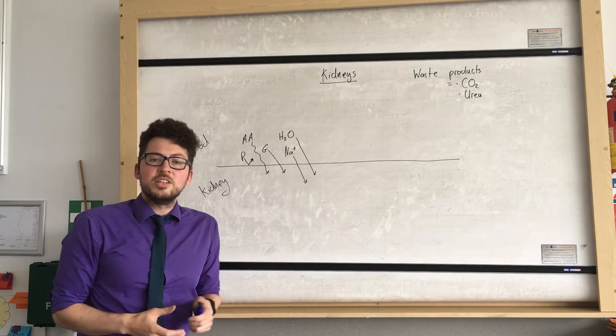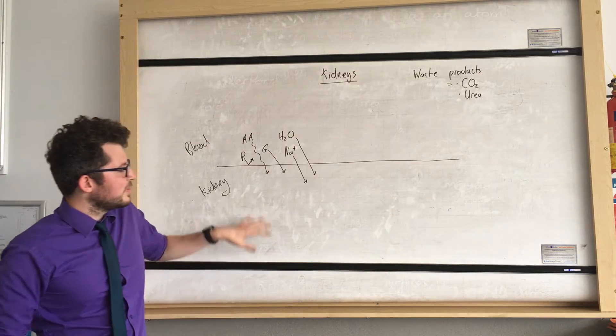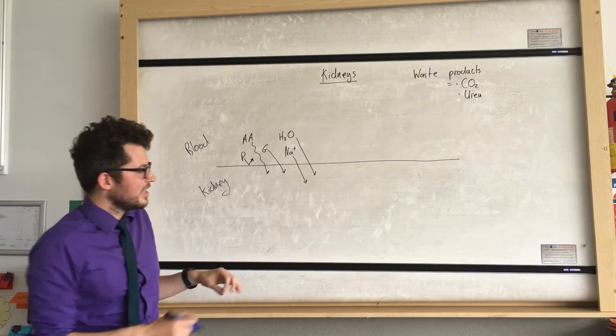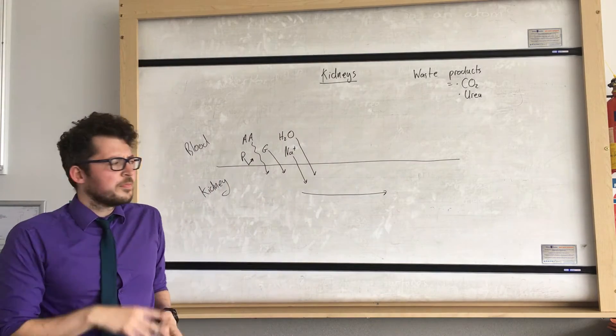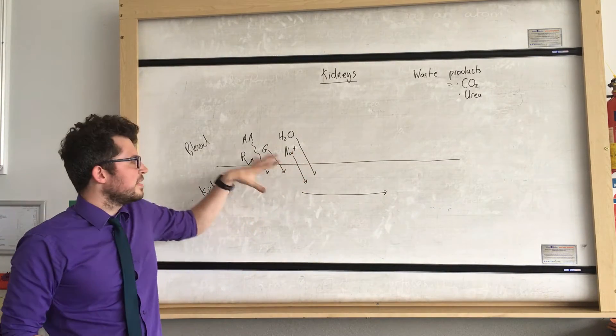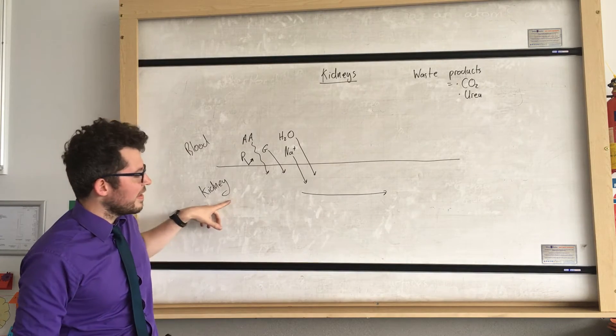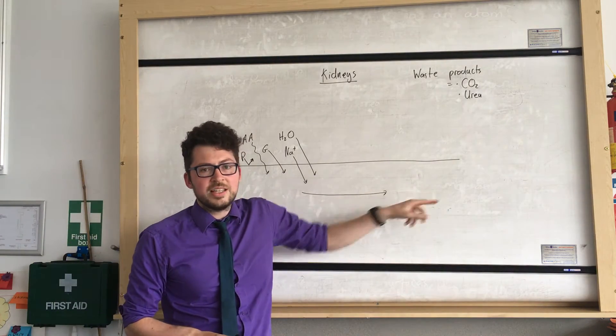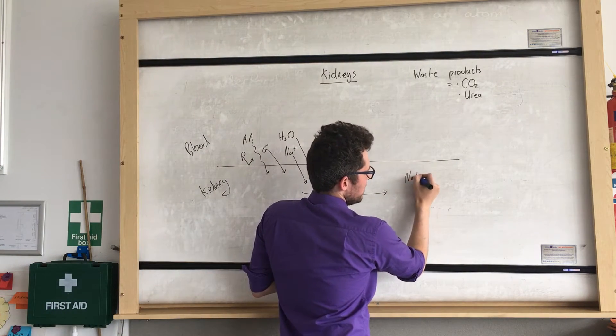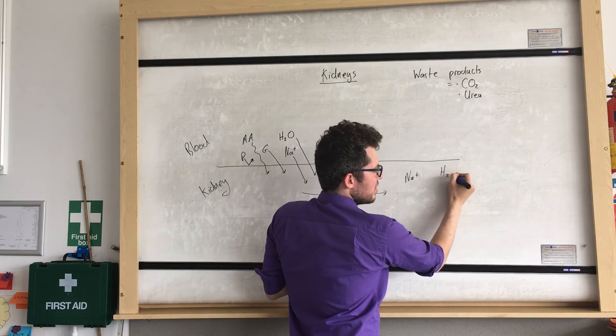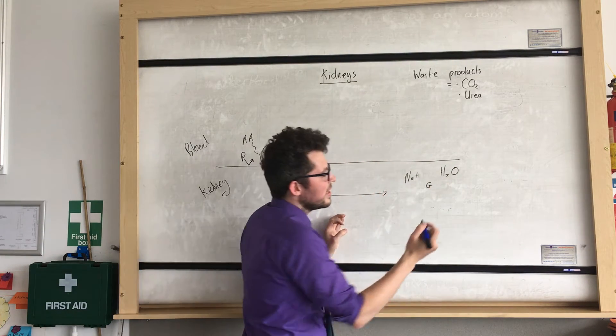So if there's protein in your urine that could be a sign that you've got some kidney problems. So all these materials have entered the kidney and then they'll travel through the kidney. Now obviously you don't want to lose all of these materials because a lot of them are useful and help us survive. Everything that remains in the kidney after this process will then be released as urine. So we've got our salts, our water, our glucose, and our amino acids.